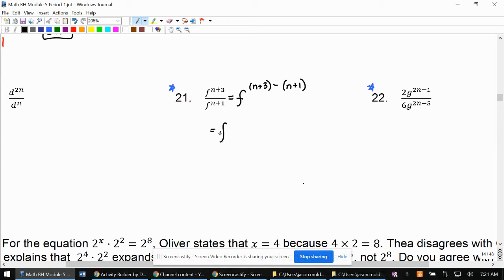All right. So what do we have? We have f to the n plus 3 minus n minus 1. We got to distribute that, which is f to the n plus - or sorry, n minus n is no n's, and 3 minus 1 is 2 - f squared.